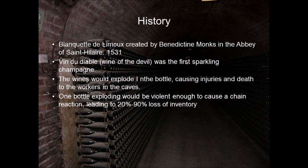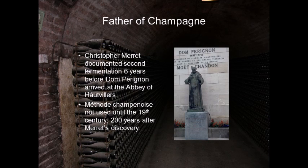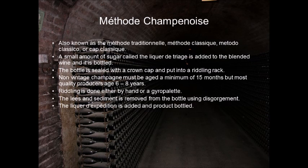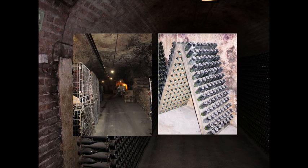Now we move on to the seven factors of Rhone Valley. Location: southern France in the Rhone River Valley, divided into two sub-regions — Northern Rhone and Southern Rhone. Climate: continental in the north with harsh winters but warm summers; Mediterranean in the south with milder winters and hot summers.